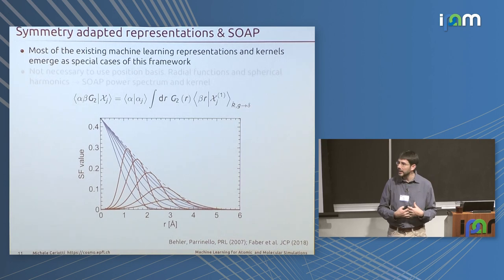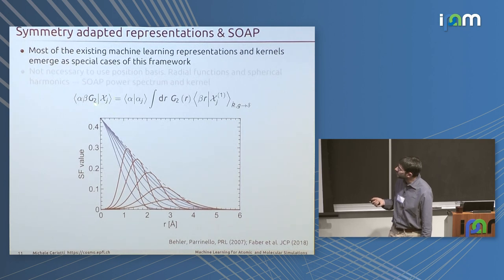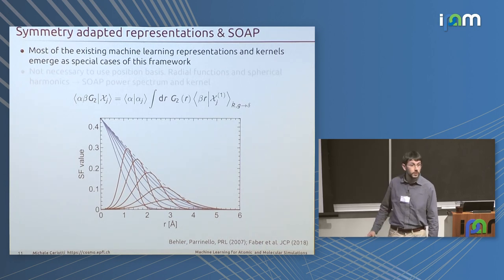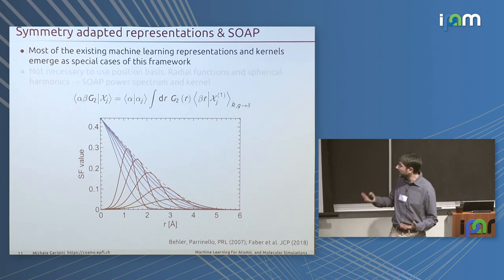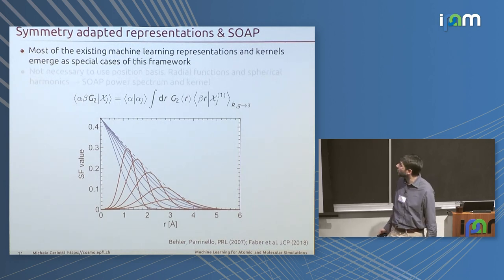You will recognize similarities with many frameworks used to build interatomic potentials. The Dirac notation makes it transparent how, for instance, Behler-Parrinello symmetry functions — used also by Rupp and DiStasio to build neural network models for molecular properties — can be seen as nothing but a projection of exactly the same object into a specific basis. Many other representations can be seen as a specific choice of basis to represent these n-body order correlations.